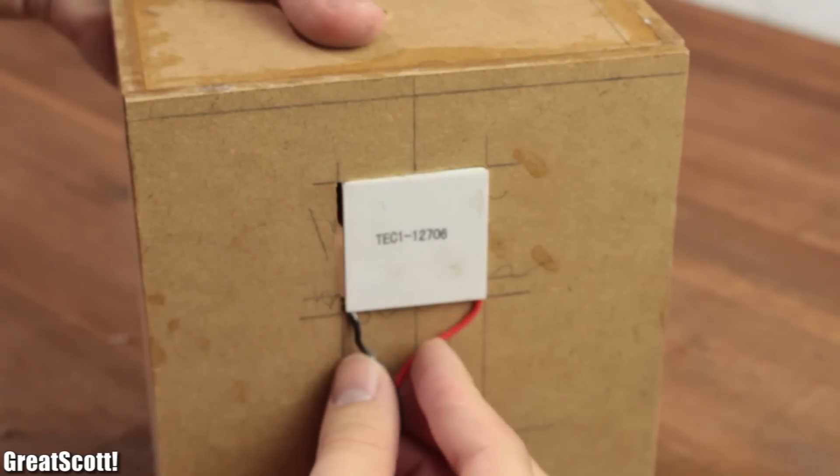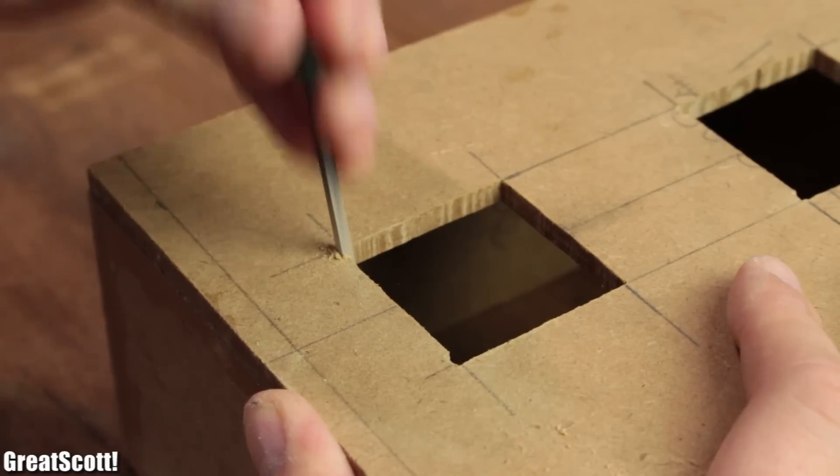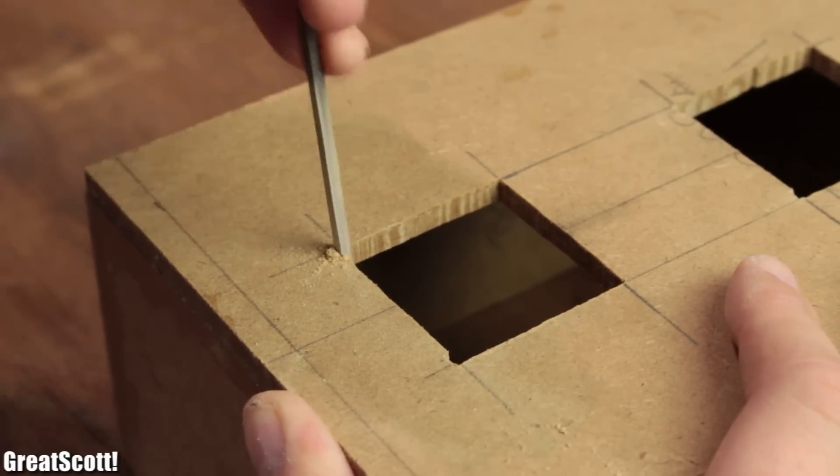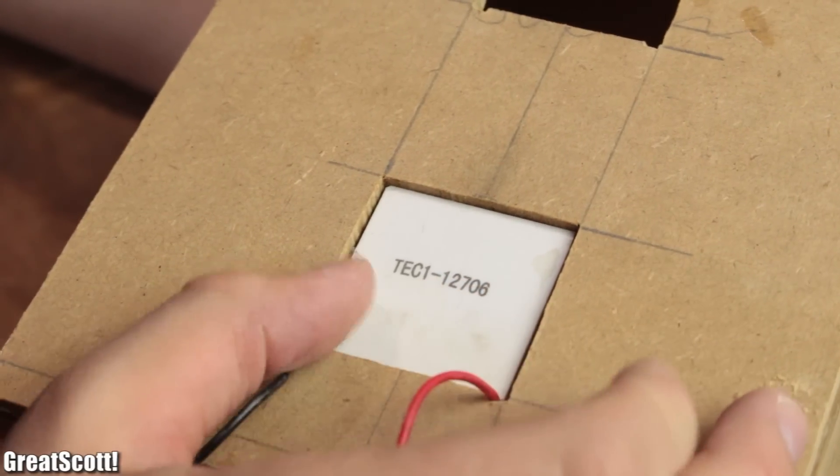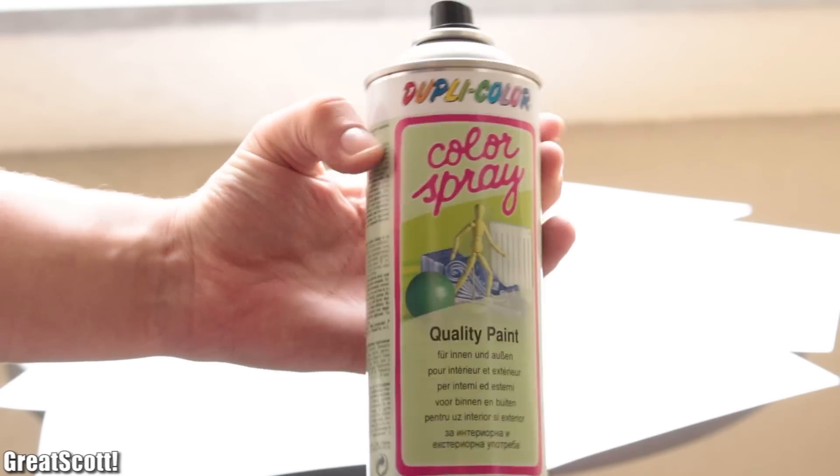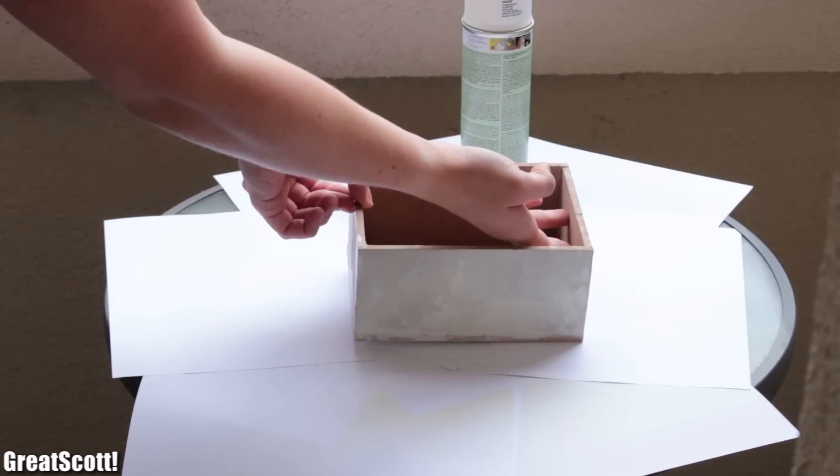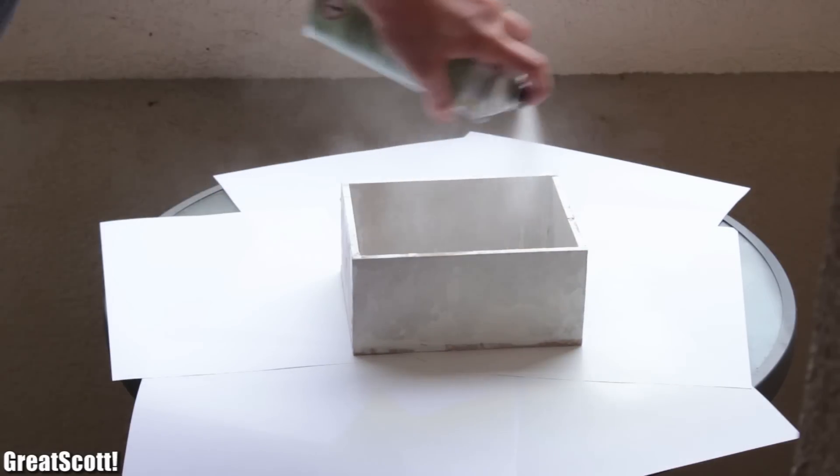But I completely forgot to create small indentations for the wire of the Peltier modules. You might want to do this before gluing all of this together. Makes your life a bit easier. Then I went outside with it and spray painted the whole thing white.